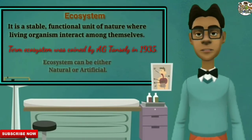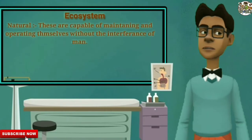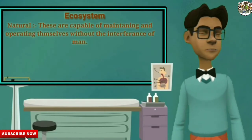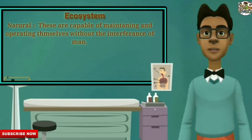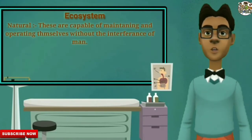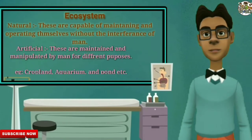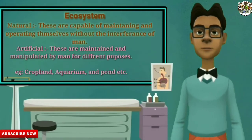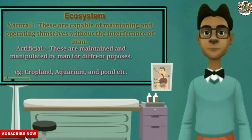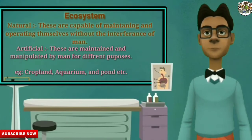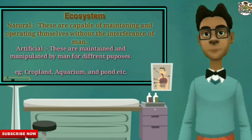Have a look. Natural ecosystems are capable of maintaining and operating themselves without the interference of man. Artificial ecosystems are maintained and manipulated by man for different purposes. For example, cropland, aquarium, pond, etc.